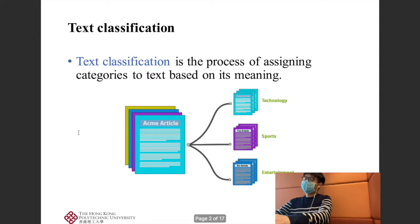What is text classification? Text classification is a very important task in natural language processing. Text classification is to assign a label or a category to text based on its meaning. As you can see in this picture, a news article can be classified as technology, sports, or entertainment.